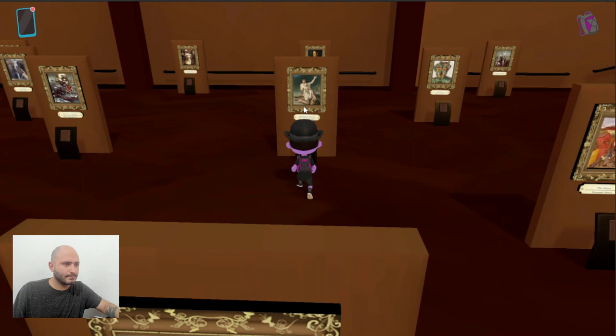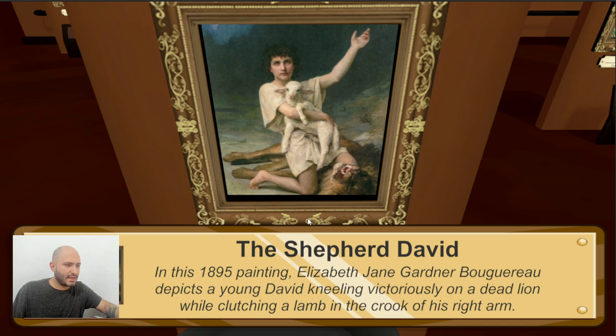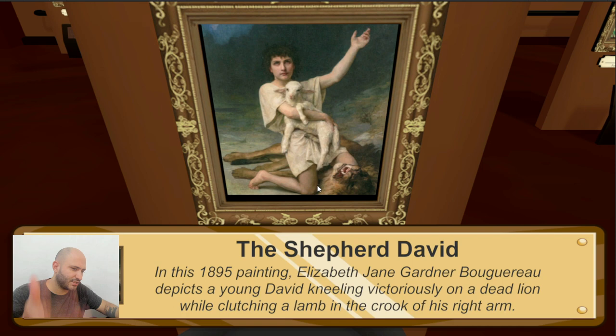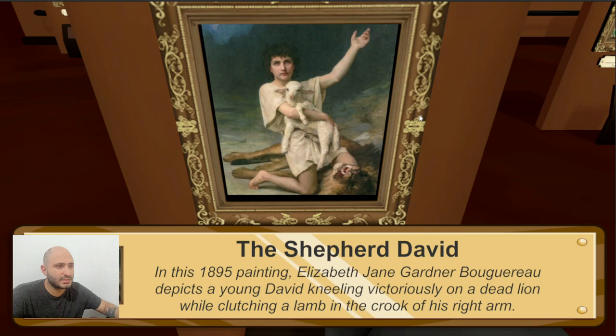This one is The Shepherd David, an 1895 painting made by Elizabeth Jane Gardner, depicting a young David kneeling victoriously on a dead lion. I'm pretty sure this is not from Latin America — neither the name of the author nor the theme seems related to what we've been seeing. I like it a lot. I guess it's also a biblical reference, but I don't know the story as well.